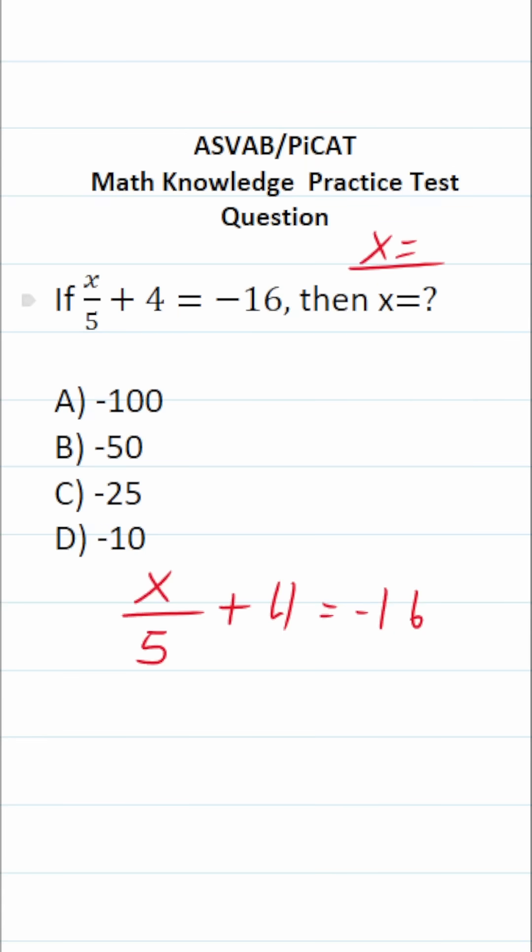In other words, we want to get x equal to something by itself. The first thing I'm going to do is subtract 4 from both sides. In doing so, this will cross out, leaving me with x over 5 equals negative 20, since negative 16 minus 4 is negative 20.